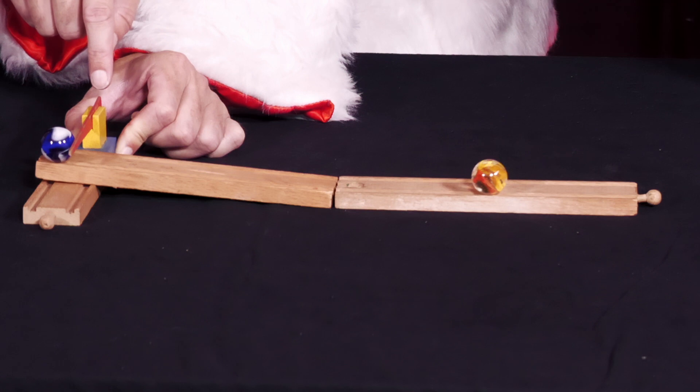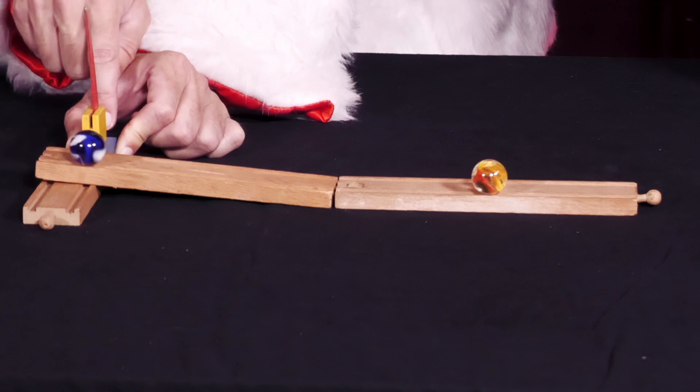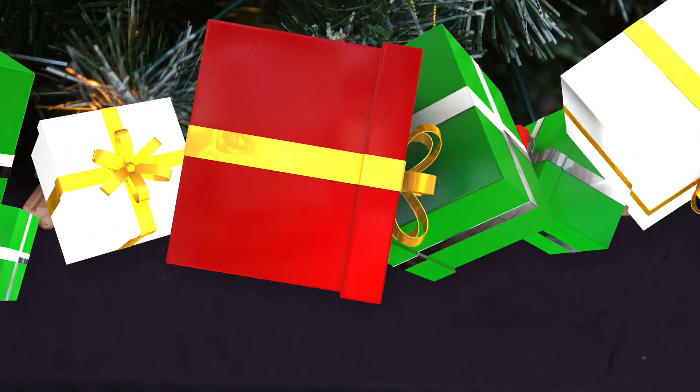Then he lets go of the top ball, A. What does he observe when the two balls, A and B, meet?